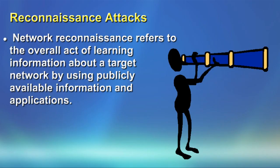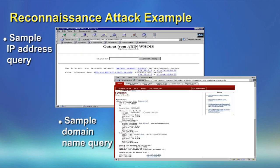A simple reconnaissance example is the URL whois.com. It is publicly available — anybody can access it, type a domain name or IP address, and submit a query. This query returns all information about that organization: the domain name, IP addresses, network administrator name, phone number, mobile number, office number, email address, and even the fax number.